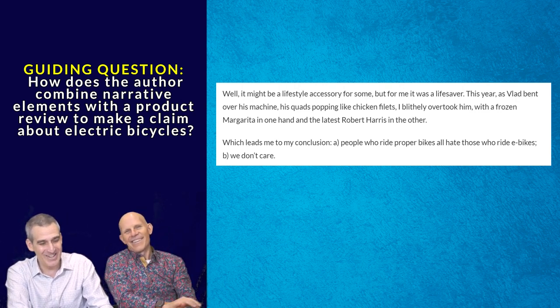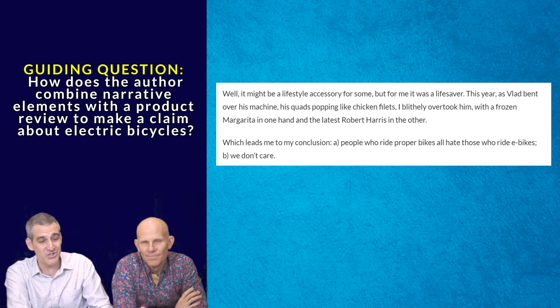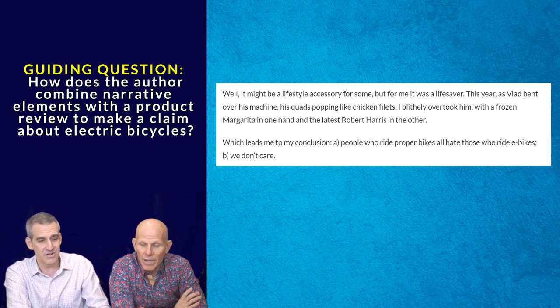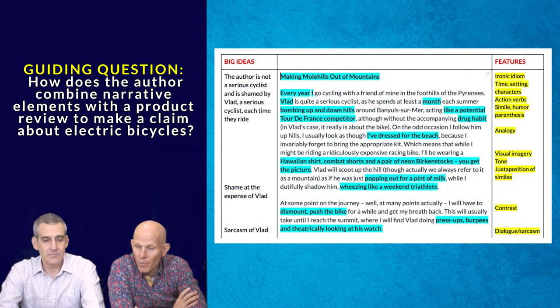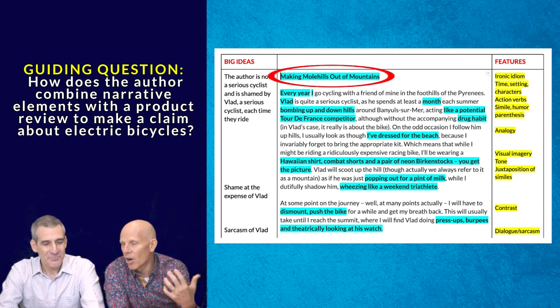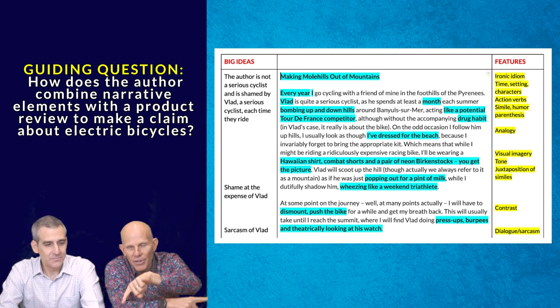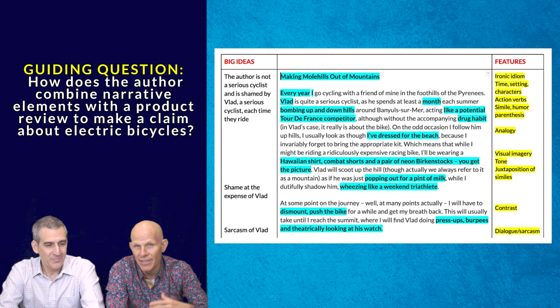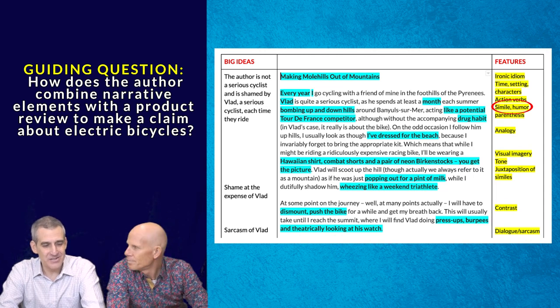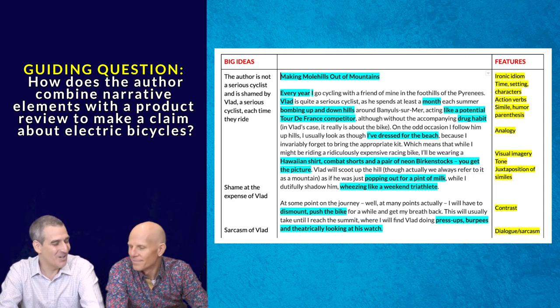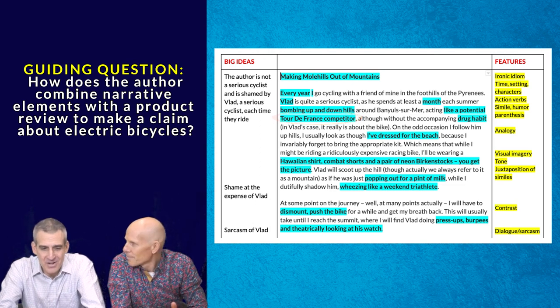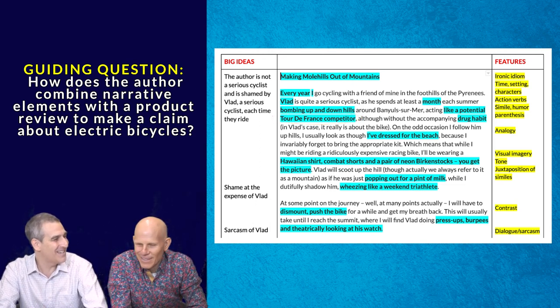All right, Mr. Giles, a really engaging piece of writing. What do you say we break it down and talk about it? Again, our guiding question is, how does the author combine narrative elements with a product review to make a claim about electric bicycles? So we're going to talk side by side about the left and the right when we talk about this. First of all, I love the title of this review, Making Molehills Out of Mountains. It subverts the sort of common cliche of mountains out of molehills, and that subversion is turning it upside down, which is quite clever, and it all taps into the idea of him climbing up the mountain. And I think when we get into the first paragraph itself, I just love how they start this juxtaposition of the way Vlad is portrayed as a character versus our rider. And they compare Vlad through simile to a potential Tour de France competitor. Of course, this is the most famous bicycle race in the world, and it just really emphasizes how seriously Vlad takes this.